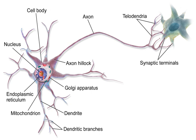A neural circuit is a population of neurons interconnected by synapses to carry out a specific function when activated. Neural circuits interconnect to one another to form large-scale brain networks. Biological neural networks have inspired the design of artificial neural networks.